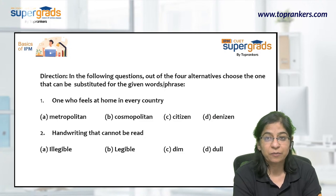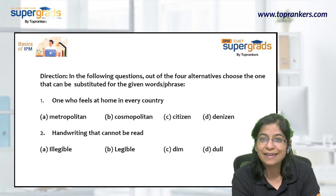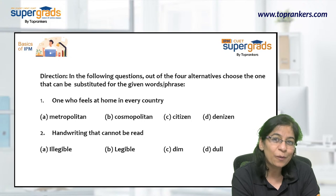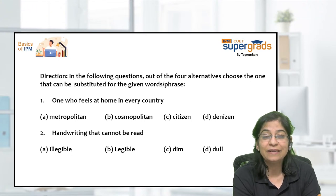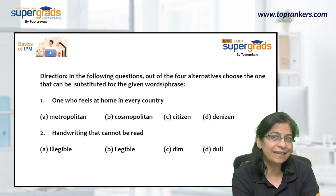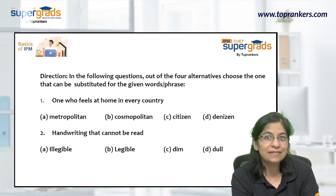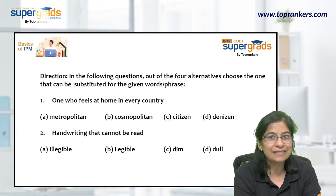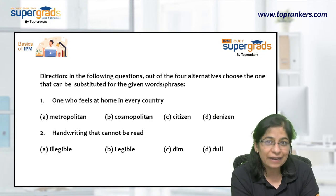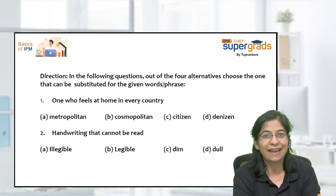The next one is: 'Handwriting that cannot be read.' Handwriting that you just can't read — like a doctor's handwriting. Now, dim or dull are clearly not the answer here. Legible means handwriting that can be read, and illegible is its opposite — handwriting that cannot be read. So a handwriting that cannot be read is definitely illegible handwriting.